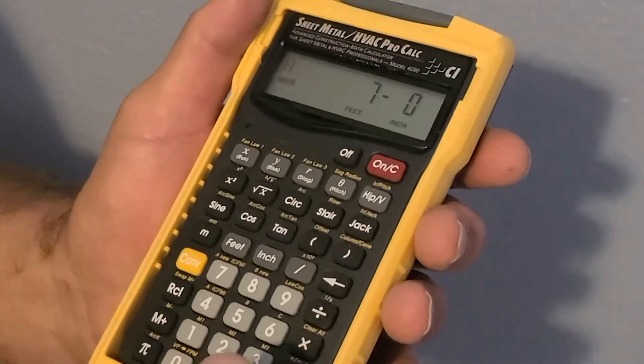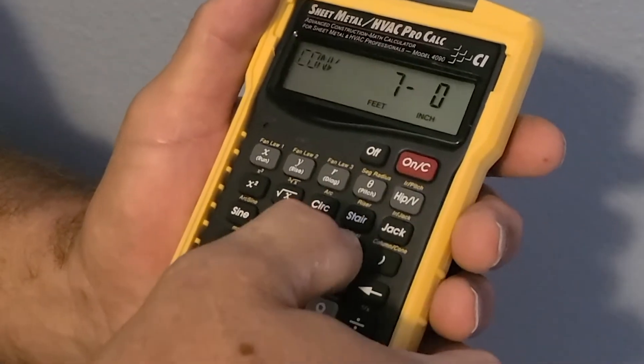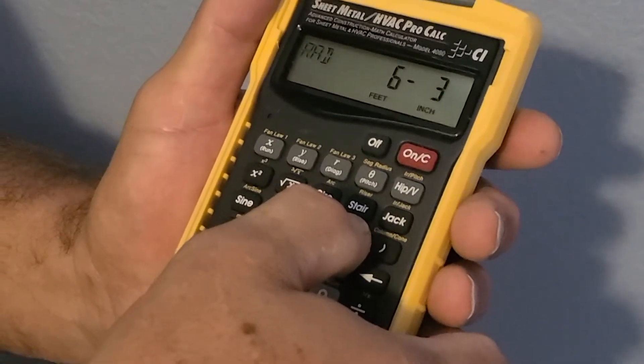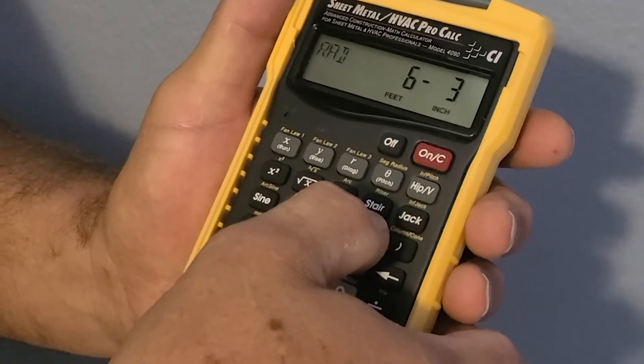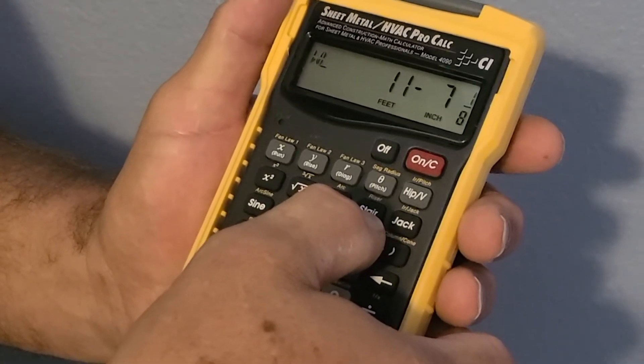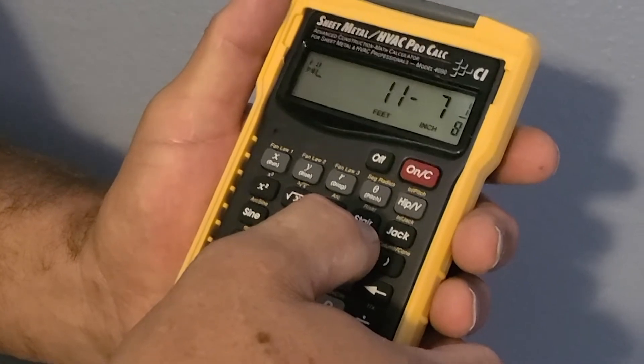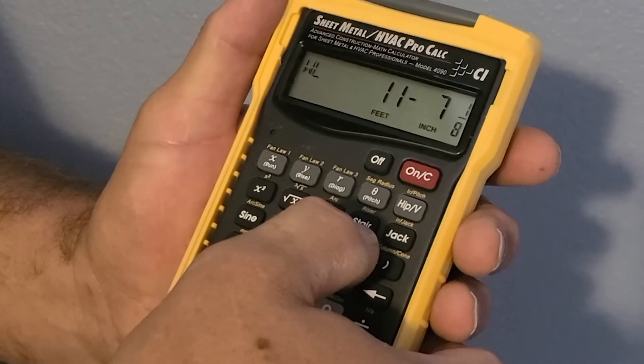The calculator does the rest. Press convert, parentheses, and the first answer is for the radius of 6 feet, 3 inches. The second push of the parentheses gives you the wrapper length, or WL, which is 11 feet, 7 and 1 eighth inches.